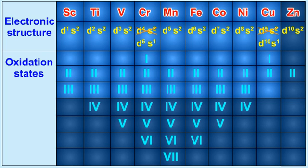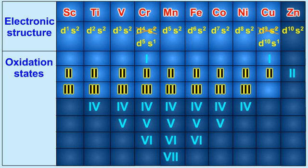The transition elements in lower oxidation states, +2 and +3, generally form ionic bonds, and in higher oxidation states they form covalent bonds.